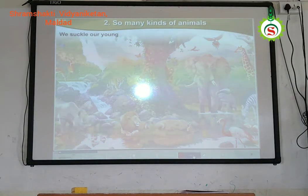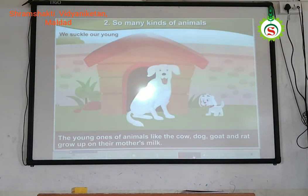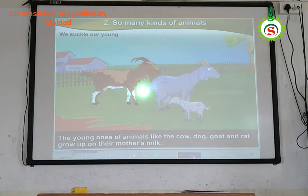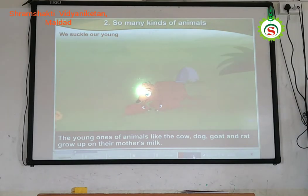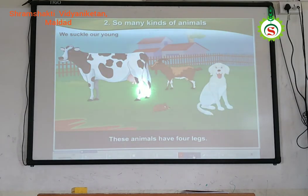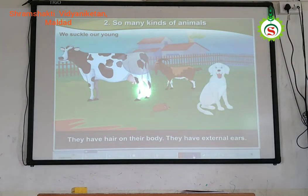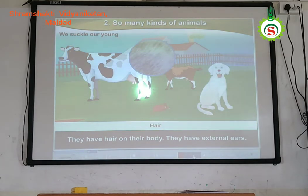We start with those that suckle their young. The young ones of animals like the cow, dog, goat, and rabbit grow up on their mother's milk. These animals have four legs. They have hair on their body. They have external ears.